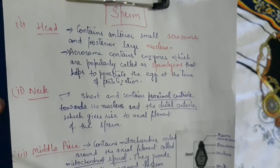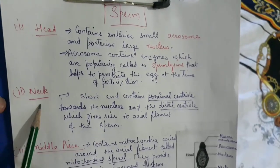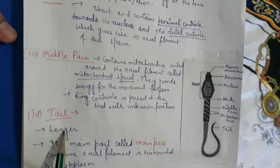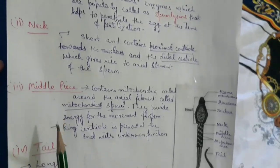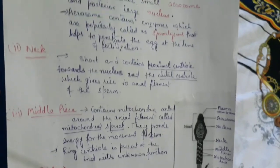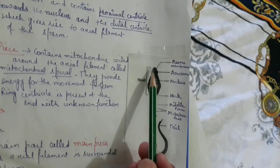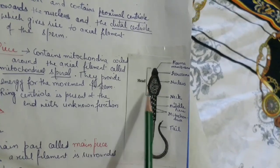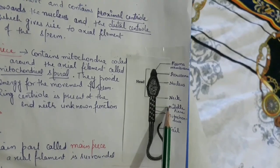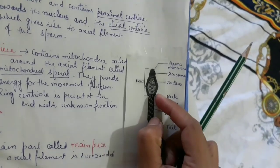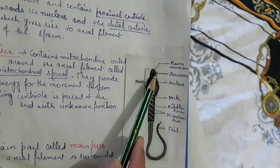Sperm mainly has four parts: head, neck, middle piece, and tail. Looking at the diagram, you can see each color-coded part. This is the head, this is the neck — there is a depression at the neck. This is the middle piece, and the last part is the tail.